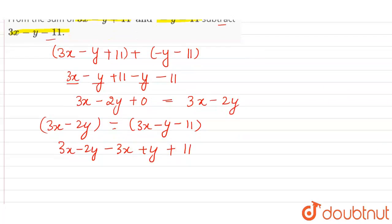Again we have to add the like terms together. So 3x minus 3x is 0, minus 2y and plus y. This is minus y plus 11. So the expression we got here is 11 minus y or minus y plus 11.